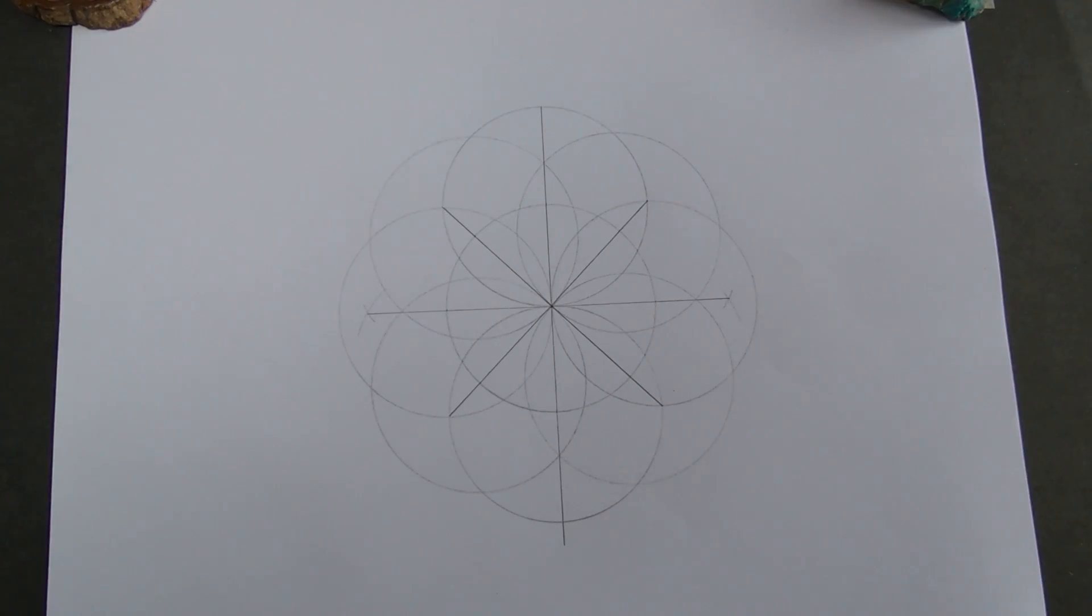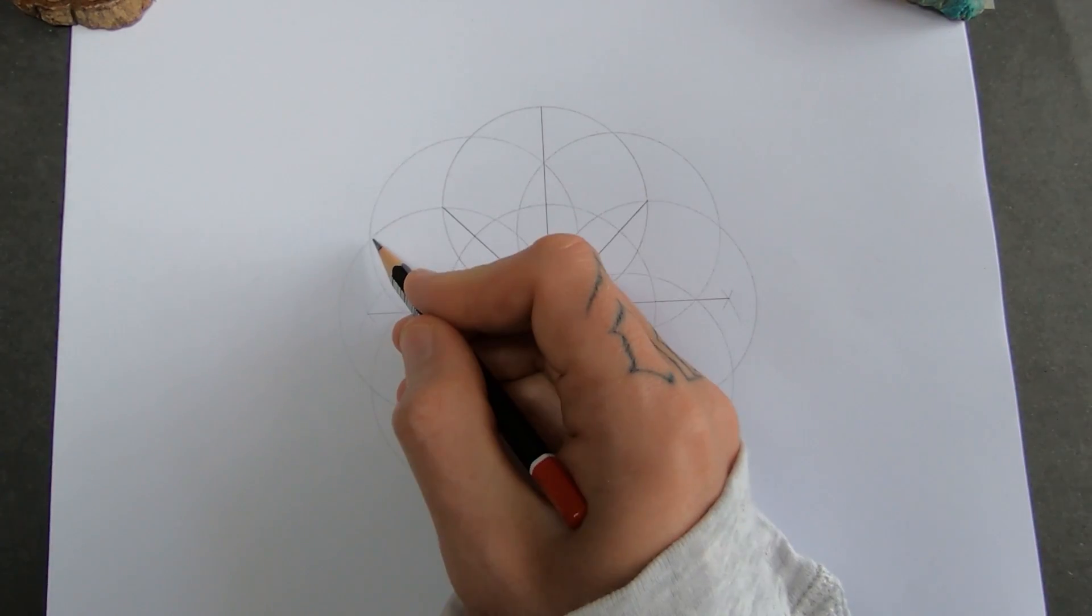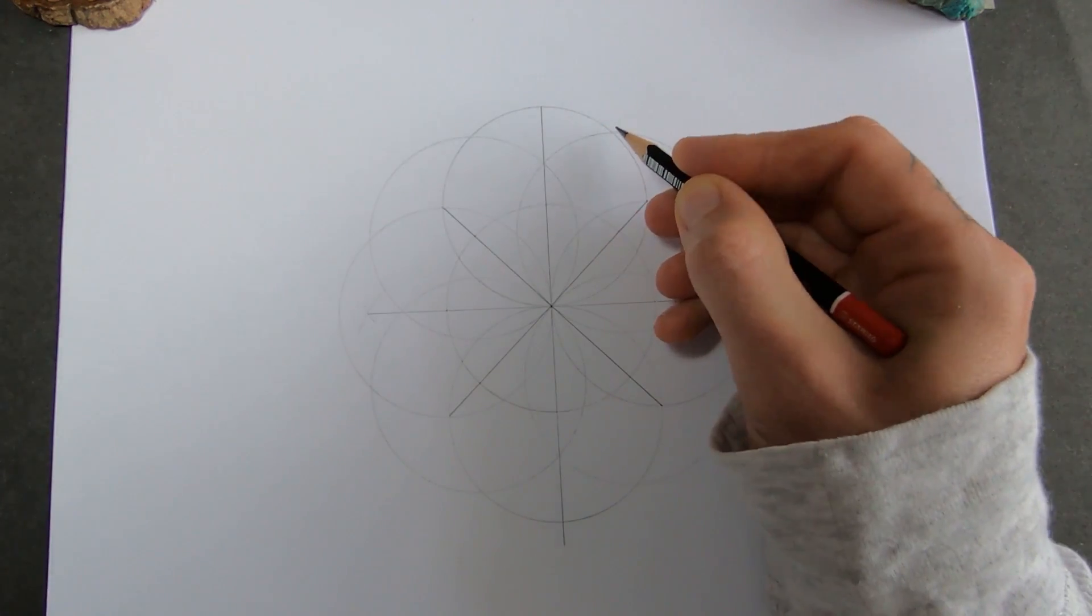Cool. I don't know if this symbol's got a name. Is it like the... It's very similar to the seed of life, isn't it? So now basically all I've got to do is connect these points where the circles cross on the outside.